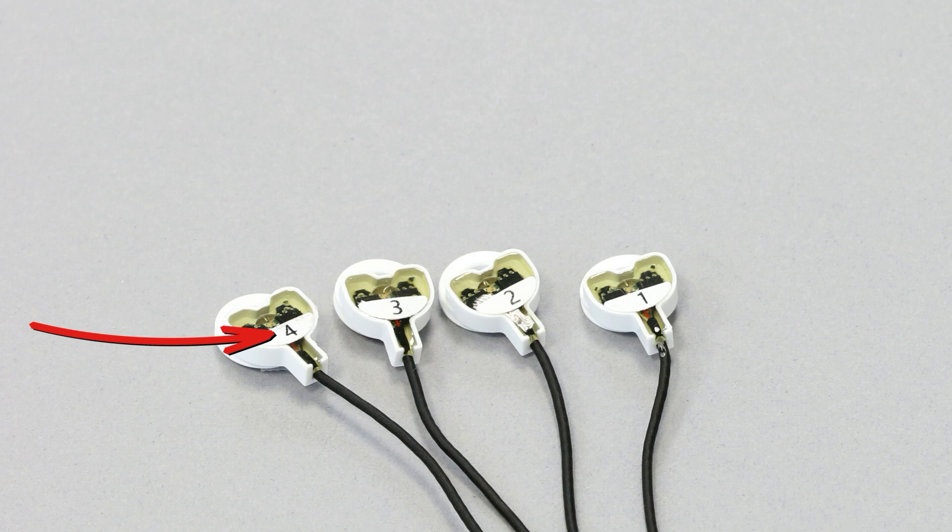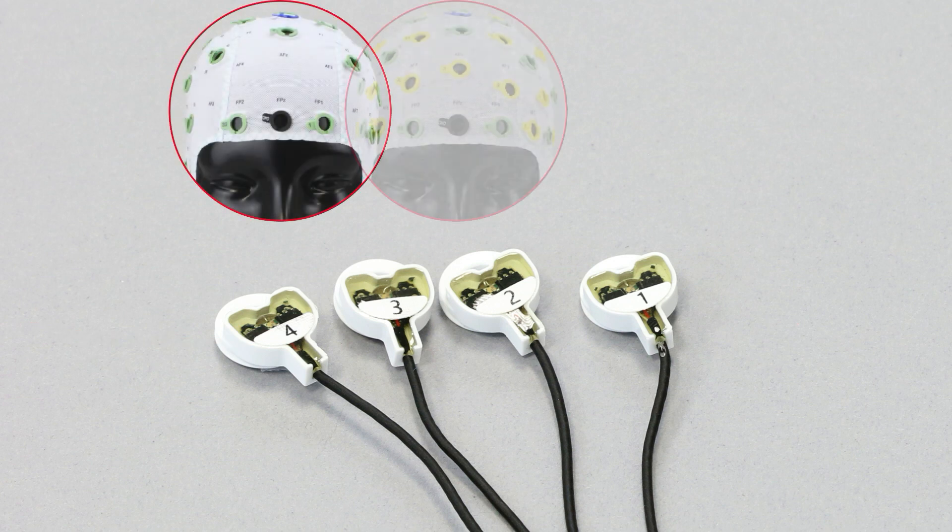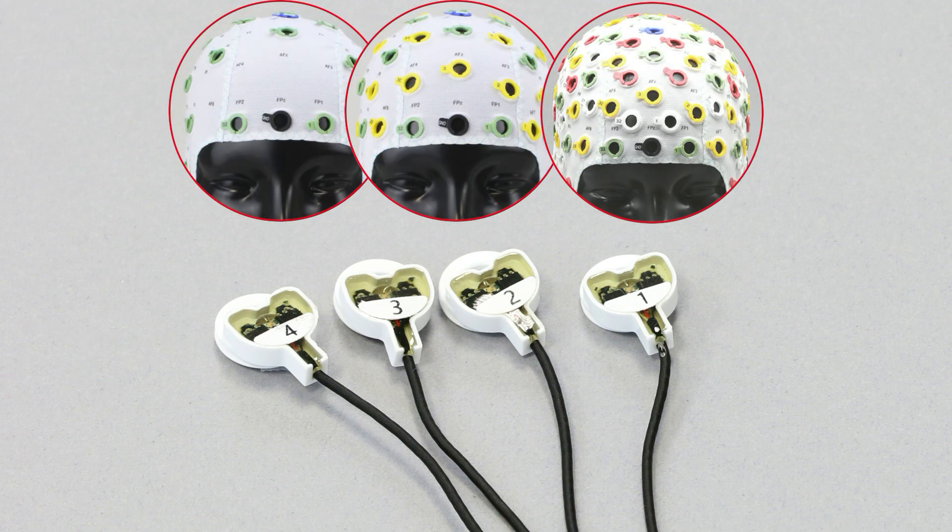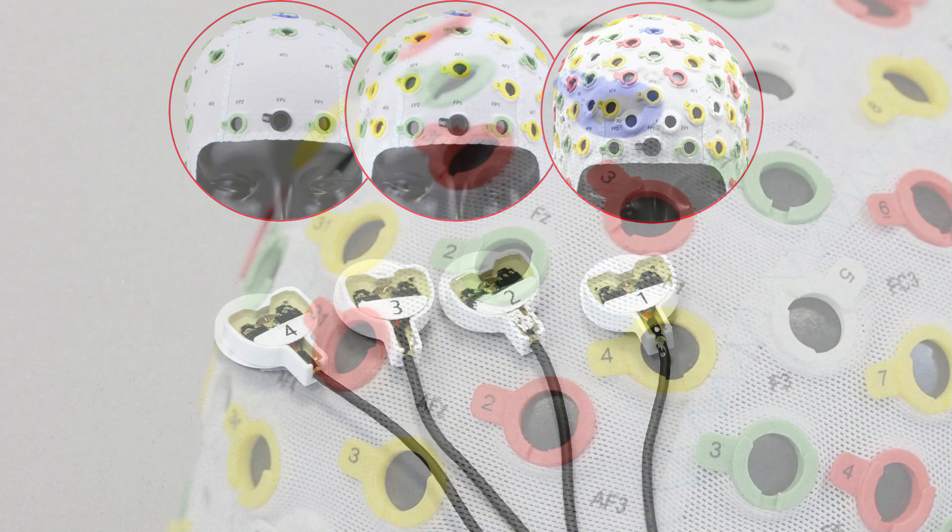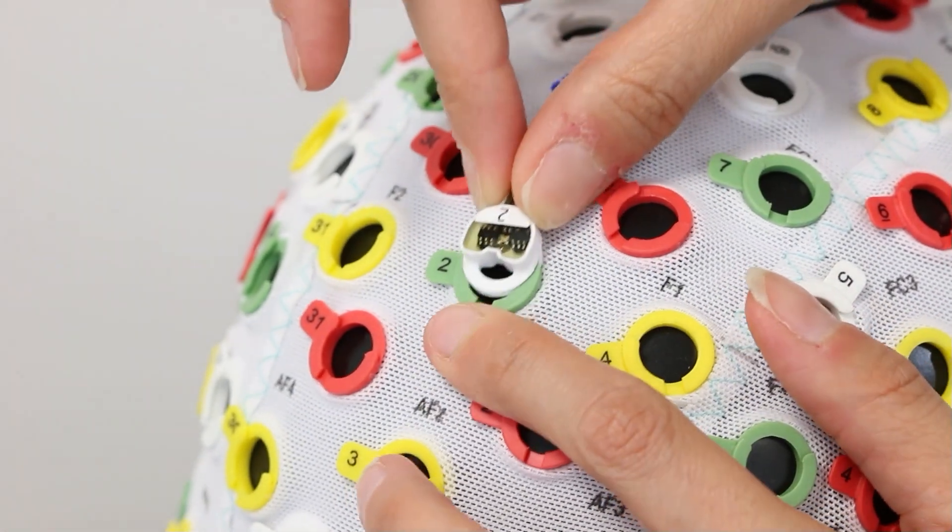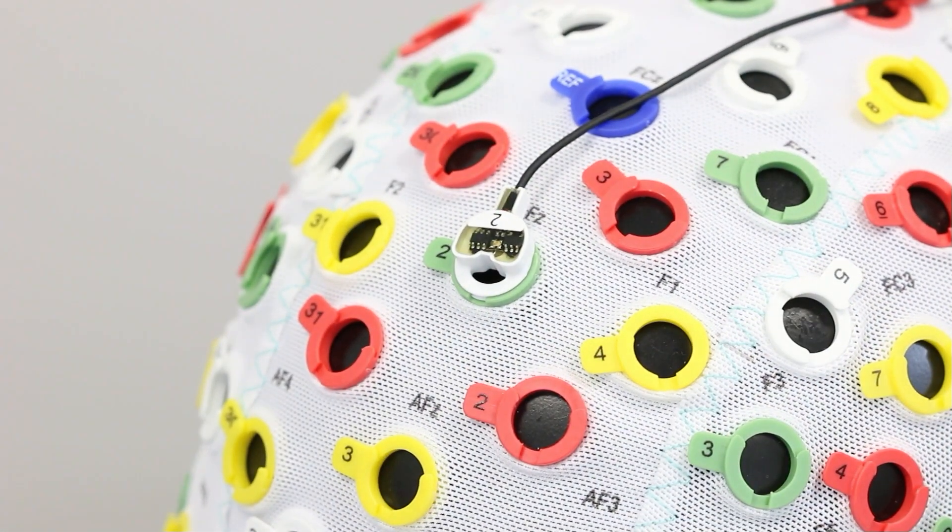ActiCap slim electrode bundles can therefore be moved in between ActiCap snap caps of different channel counts, sizes and layouts, by inserting the electrodes into dedicated holders. These holders are fixed within the cap fabric and also labeled with numbers from 1 to 32. This design eliminates any guesswork when inserting the electrodes into the respective holders.